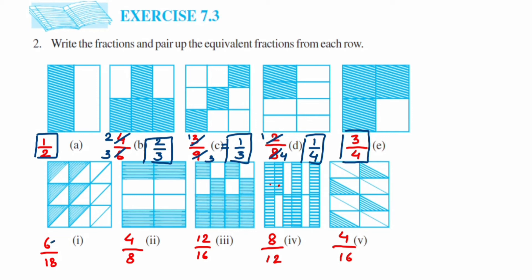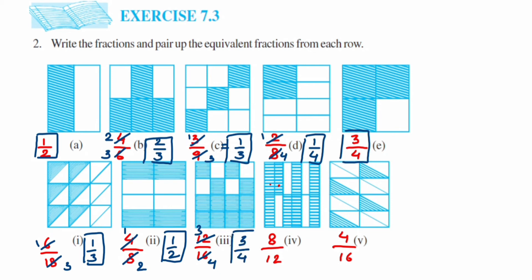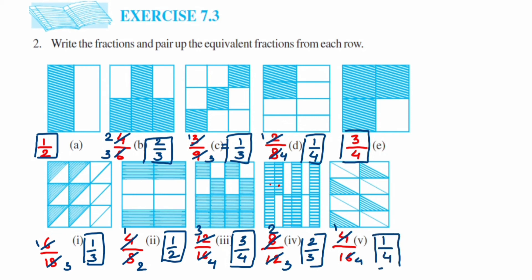For the second row: 6 upon 18 simplifies to 1 upon 3. 4 upon 8 simplifies to 1 upon 2. 12 upon 16 — dividing by 4 gives 3 upon 4. 8 upon 12 — dividing by 4 gives 2 upon 3. And 4 upon 16 — dividing by 4 gives 1 upon 4. So Row 2 simplified gives: 1/3, 1/2, 3/4, 2/3, and 1/4.